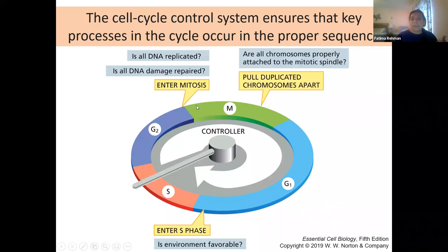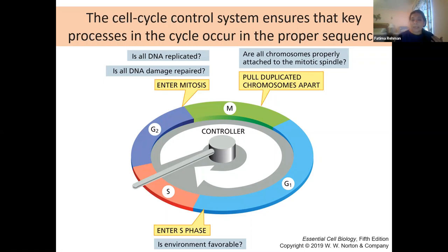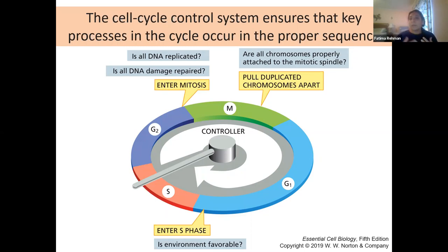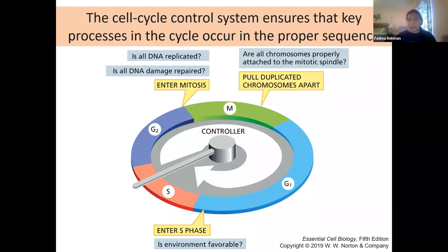There are other checks before mitosis: ensuring there's enough material to divide the cell into two viable daughter cells. Even during mitosis, there's a second checkpoint verifying that chromosomes are lining up properly and getting pulled apart appropriately so both daughter cells receive a complete genome, not a disrupted one.